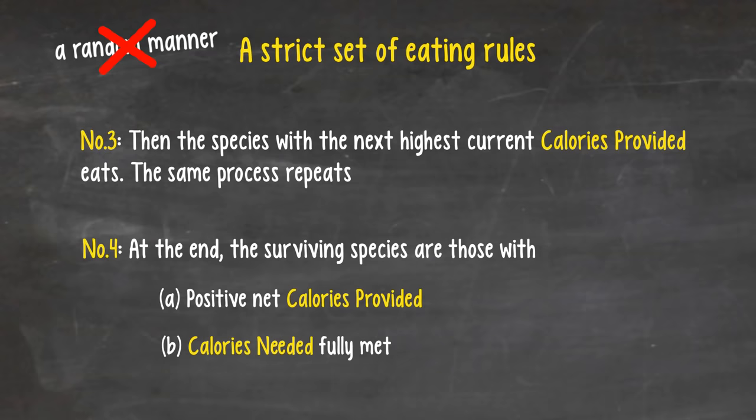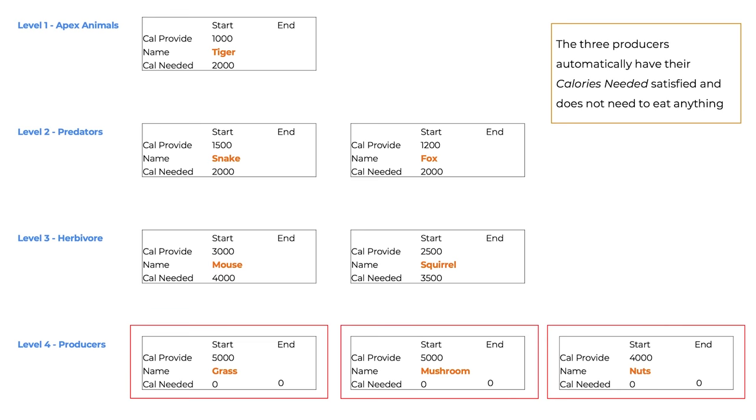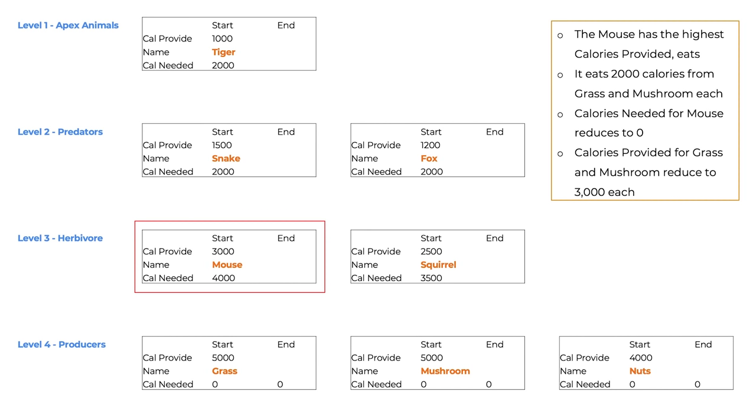Let's look at an example of a hypothetical food chain. And in this example, I will also demonstrate the note-taking method that you can use to organize data neatly in your notes. You're welcome to pause the video and try to solve this on your own first. Here's how the food chain plays out with the first three eating rules. The three producers at the bottom automatically have their calories needed satisfied and do not need to eat anything. Beside the three producers, the first species to eat is an animal, the mouse, because it produces the most calories, 3,000. It takes calories equally from grass and mushroom, which have equal calories provided of 5,000 each. The mouse needs 4,000 calories, so it takes 2,000 from each.